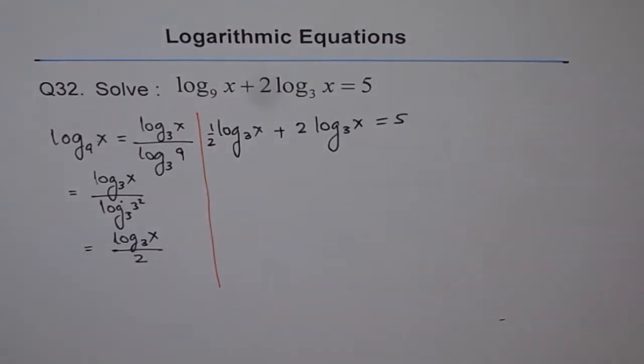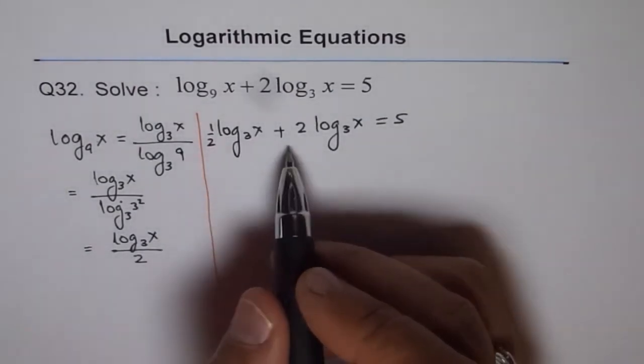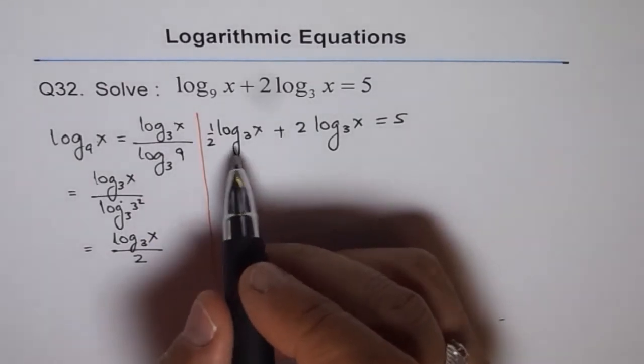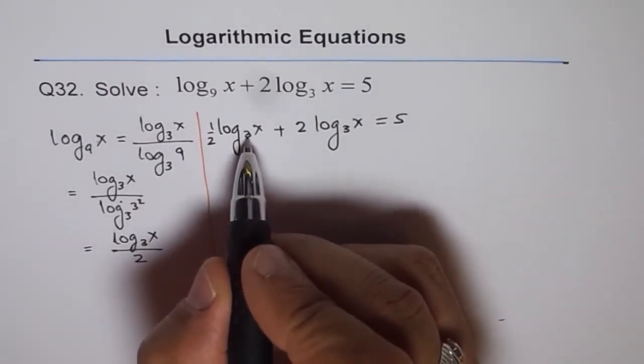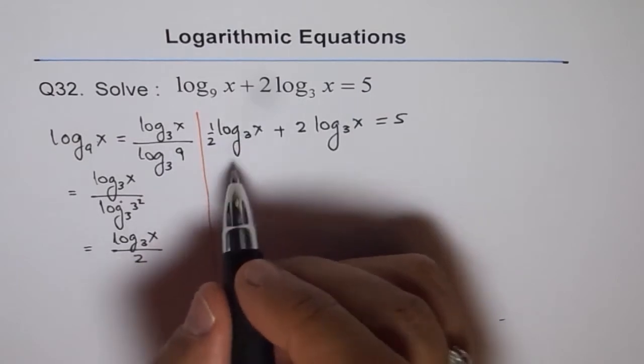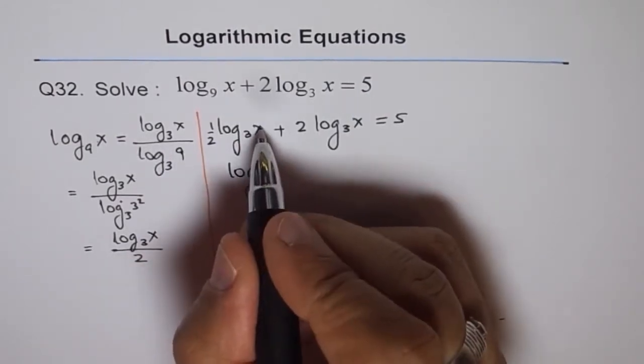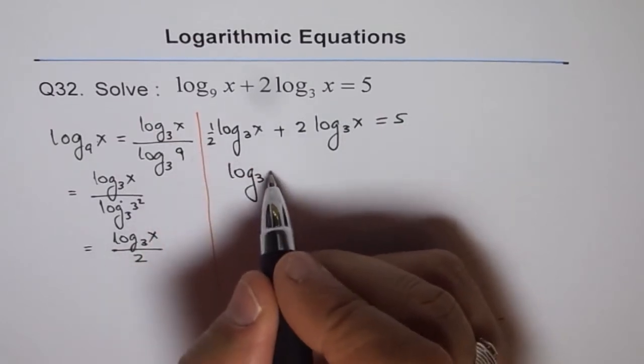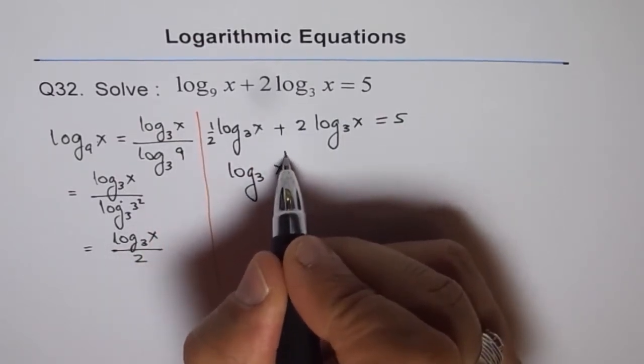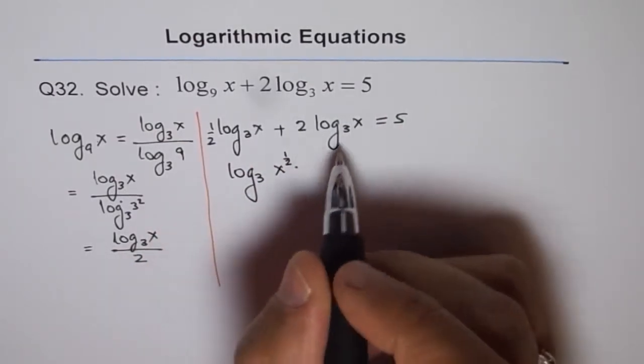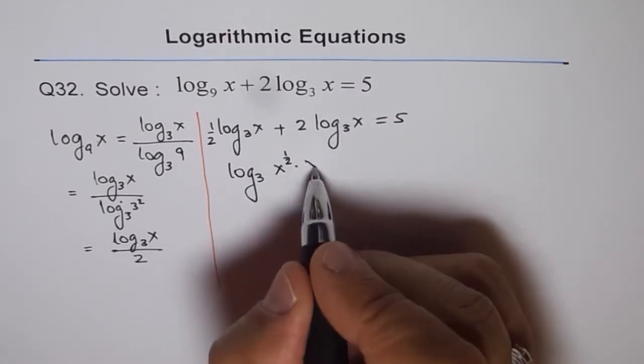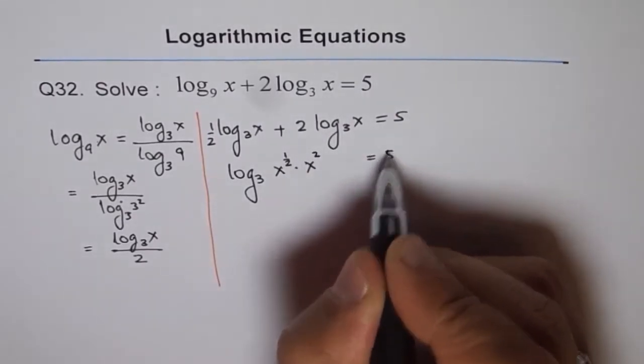We can use the product rule and the power rule. Since these have the same base, this can be written as log base 3 of x to the power of one-half times x squared equals 5.